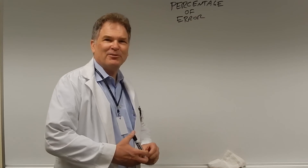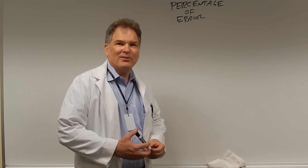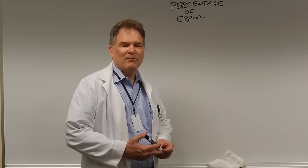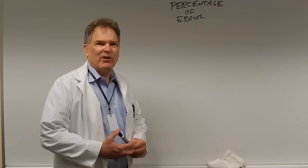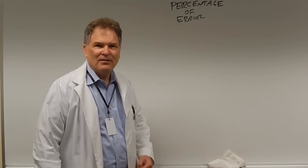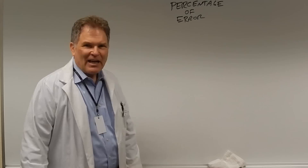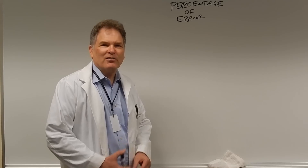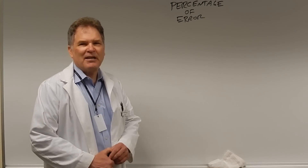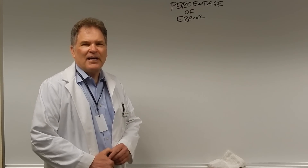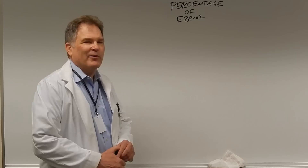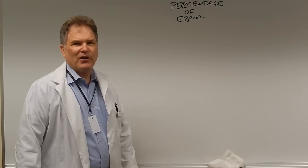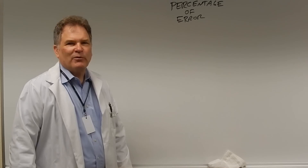Greetings and welcome to this lesson on percentage of error. Suppose you ran across a friend who said he weighed something and was off by 5 grams. The first thing you'd ask is what he weighed. If he weighed his car and was off by 5 grams, that would be incredibly accurate. But if he was weighing out a drug to make an ointment and was supposed to weigh 10 grams but got 15 grams, that's a huge error. When we talk about error, we always have to talk about percent of error, because knowing the raw grams means nothing without knowing the percentage.